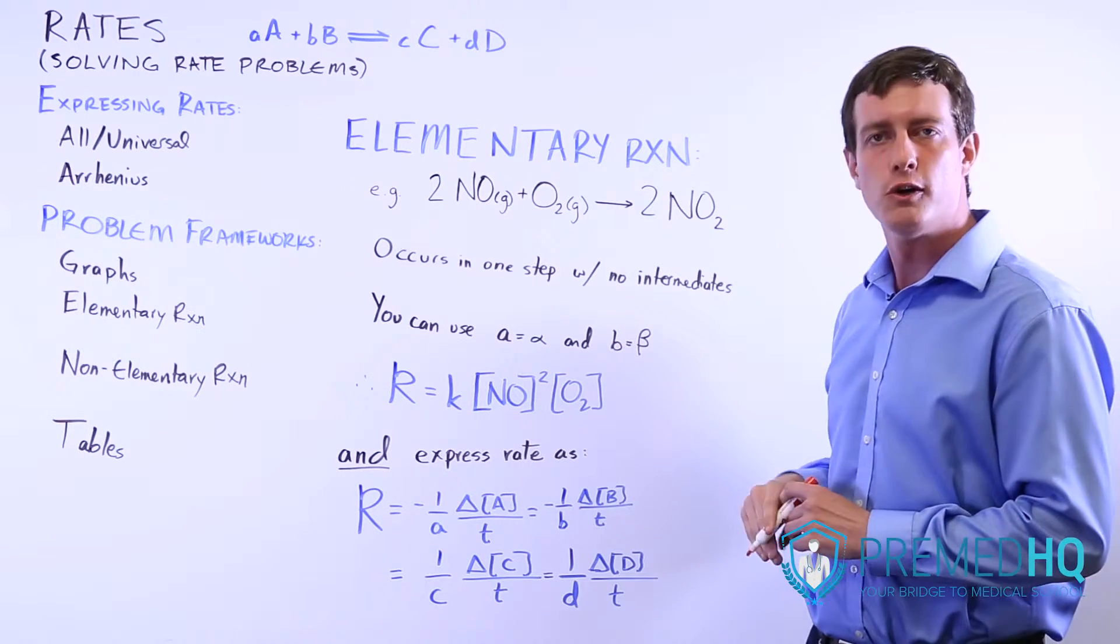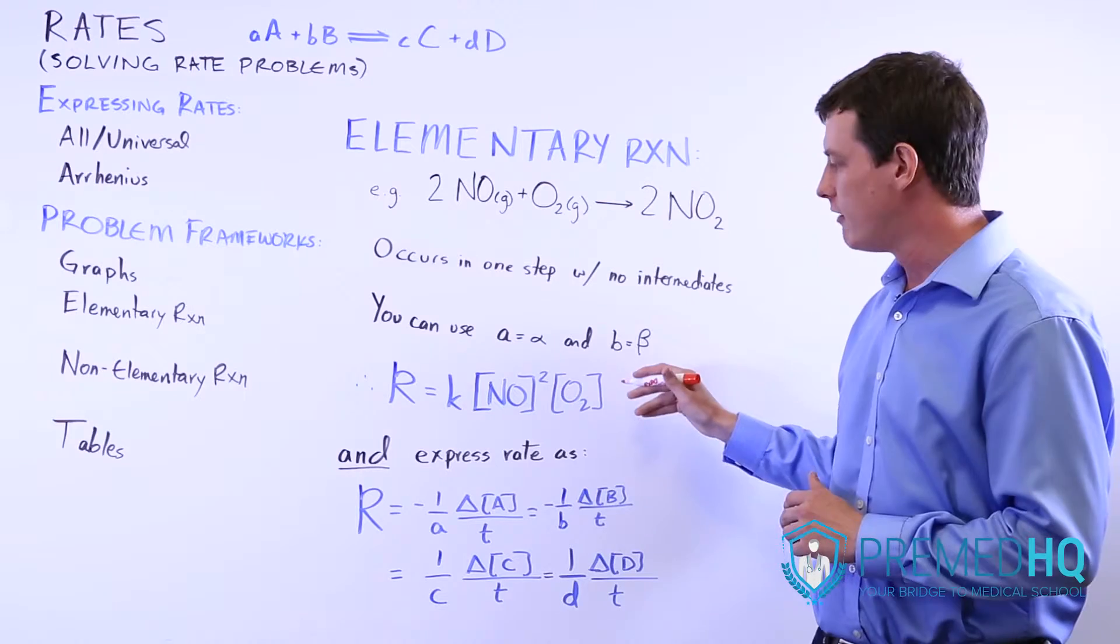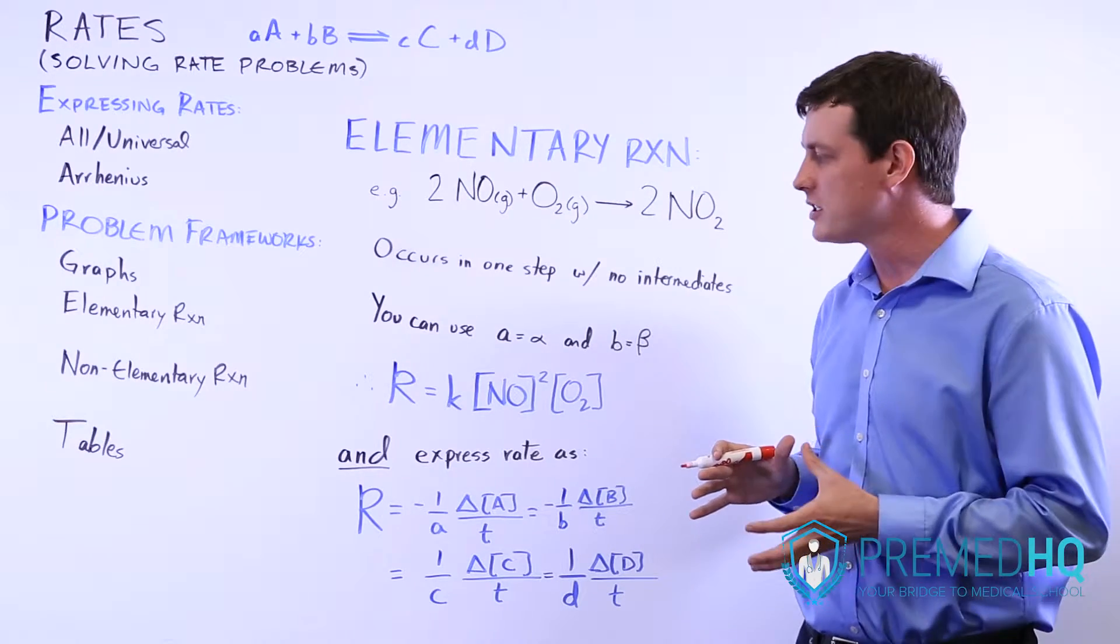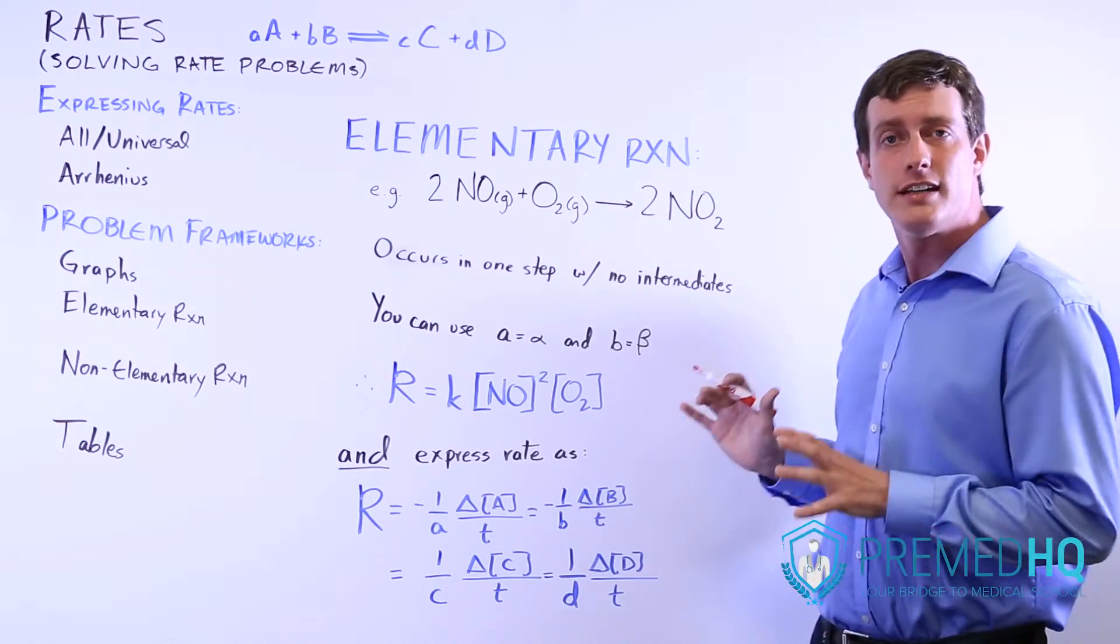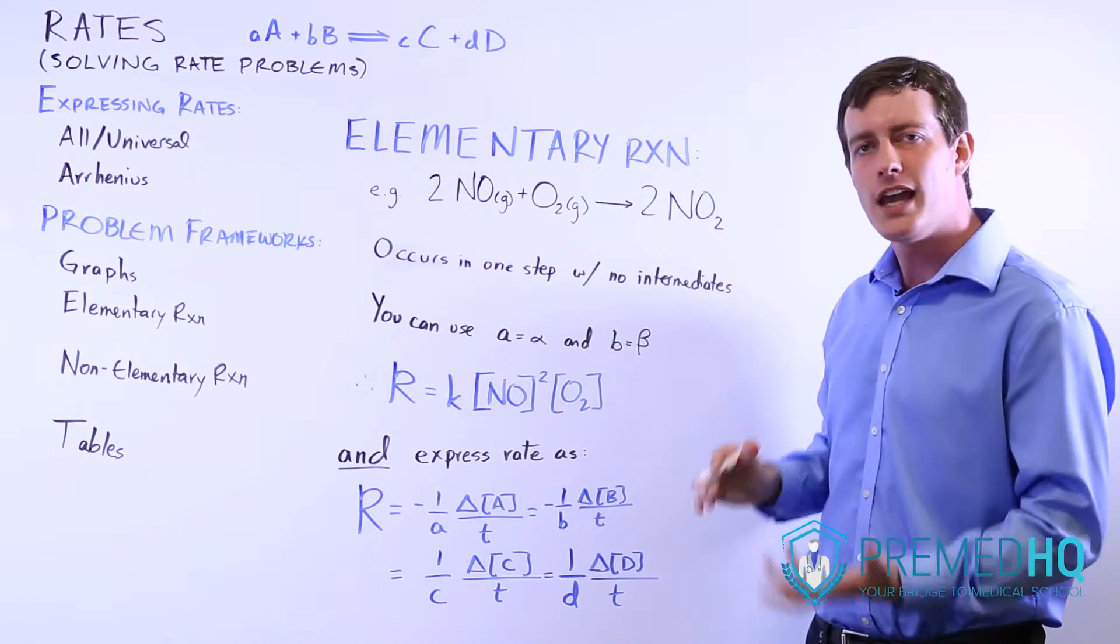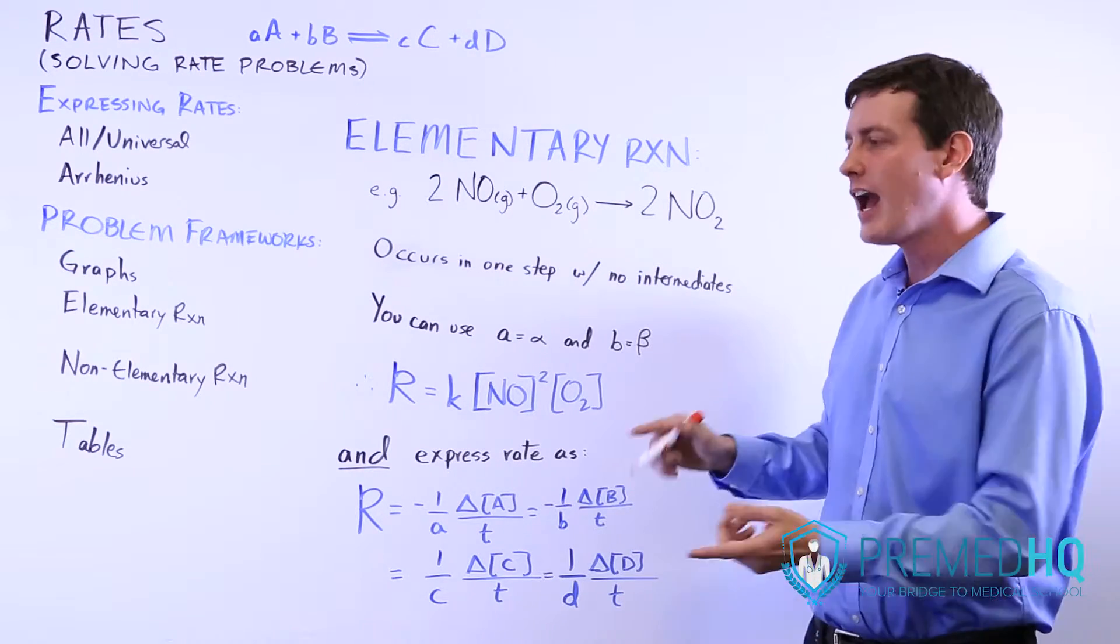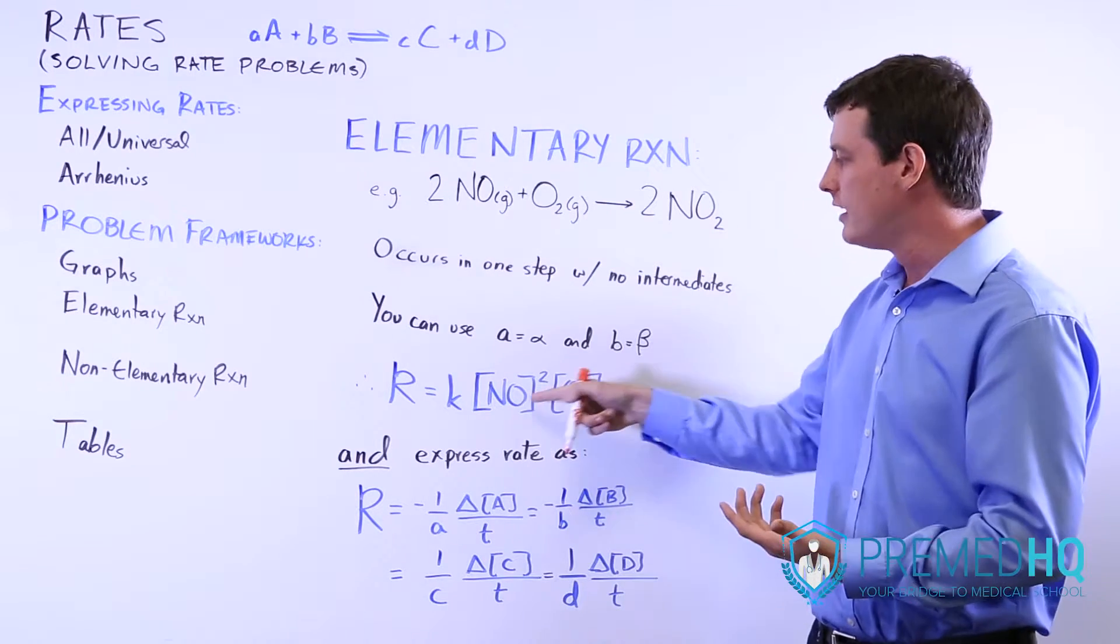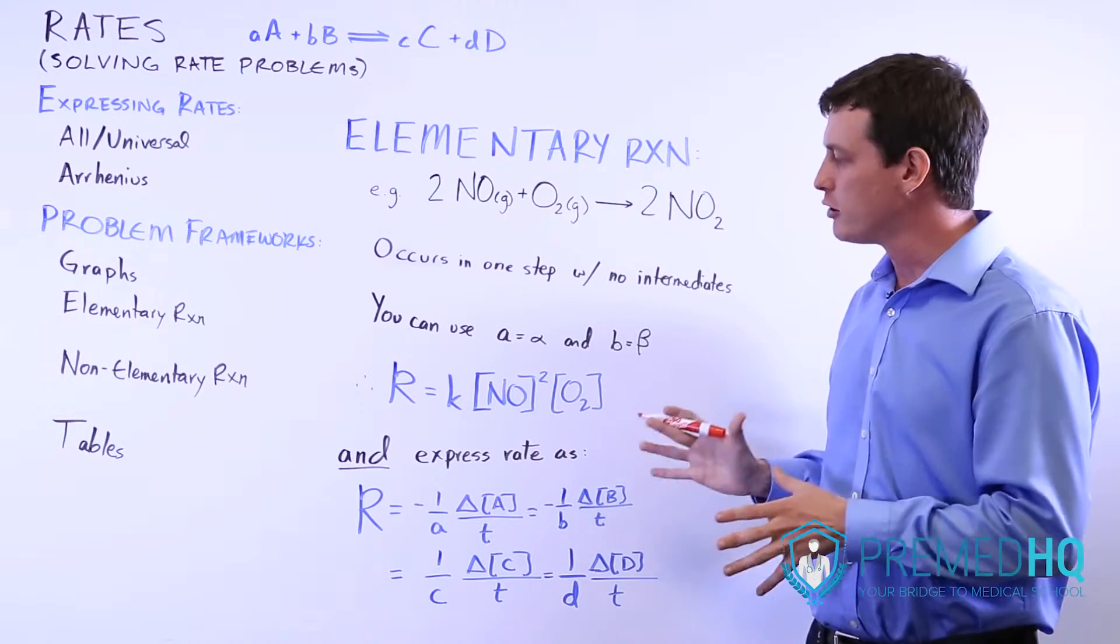It's third order overall because it's second order here, first there, and you add those two together. That's one very nice thing about elementary reactions. If it occurs in one step, then you can use the stoichiometry as the exponents that you raise these quantities to in your rate expression.